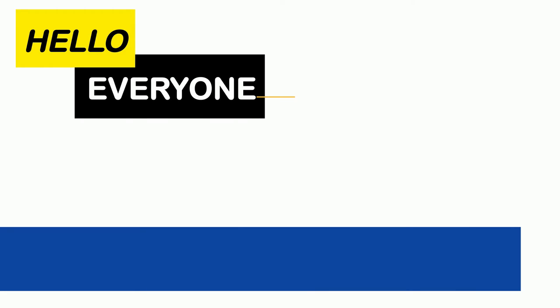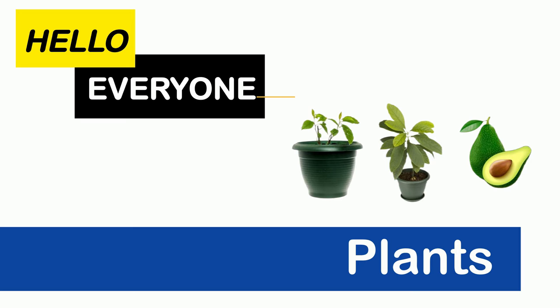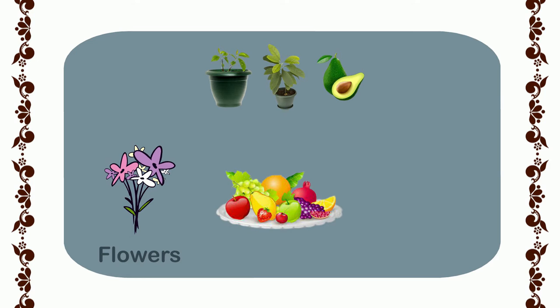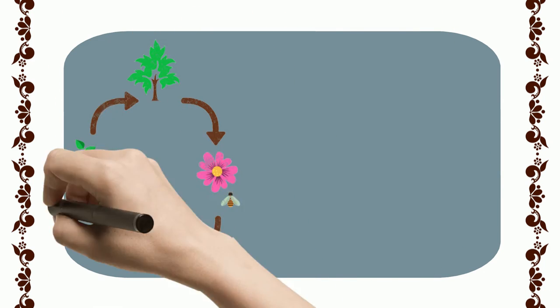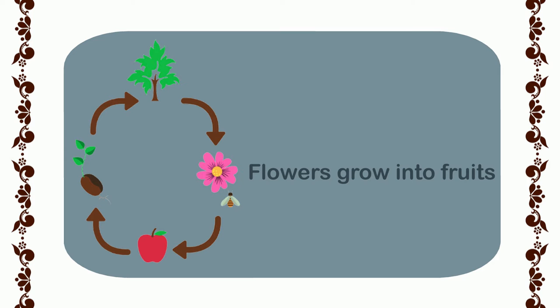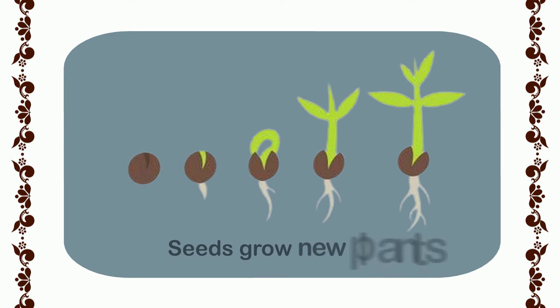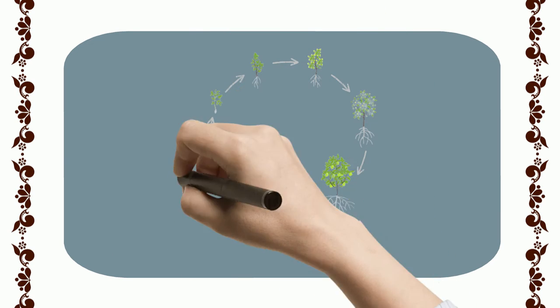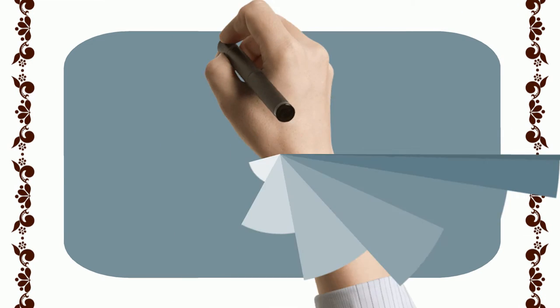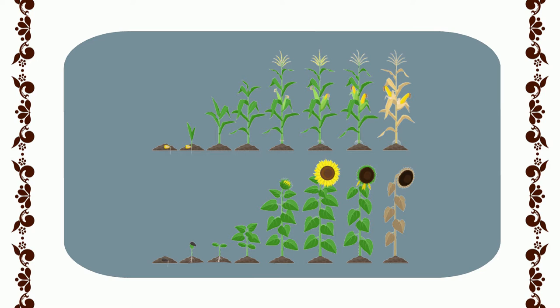Hello everyone. Today's topic is about plants. We will be learning more about some important parts of plants, which are flowers, fruits, and seeds. As you have learned earlier, flowers grow into fruits, fruits have seeds in them, and seeds grow new plants. Now you will learn more about these stages of a plant: flowers to fruits, fruits to seeds, and seeds to plants.